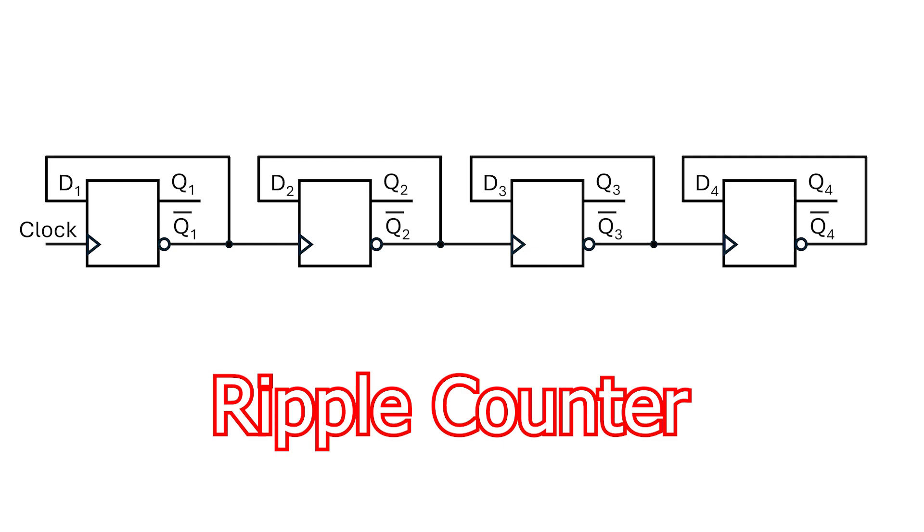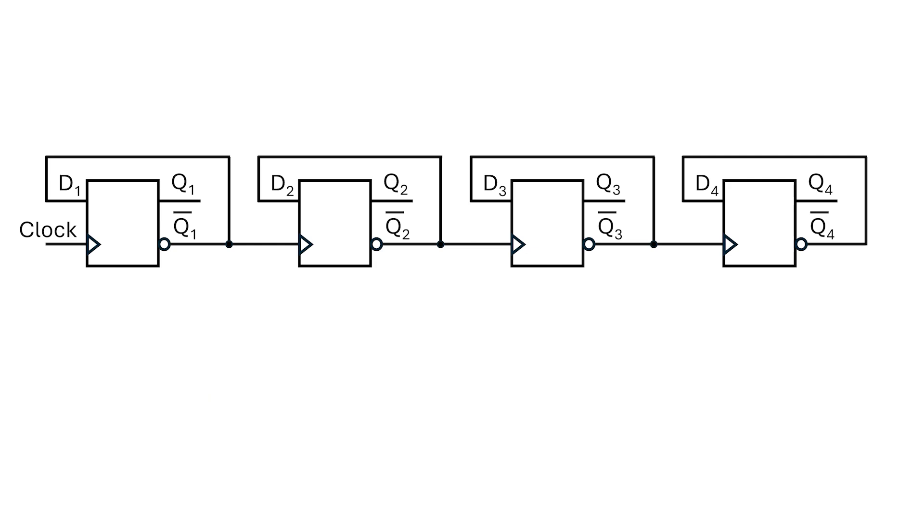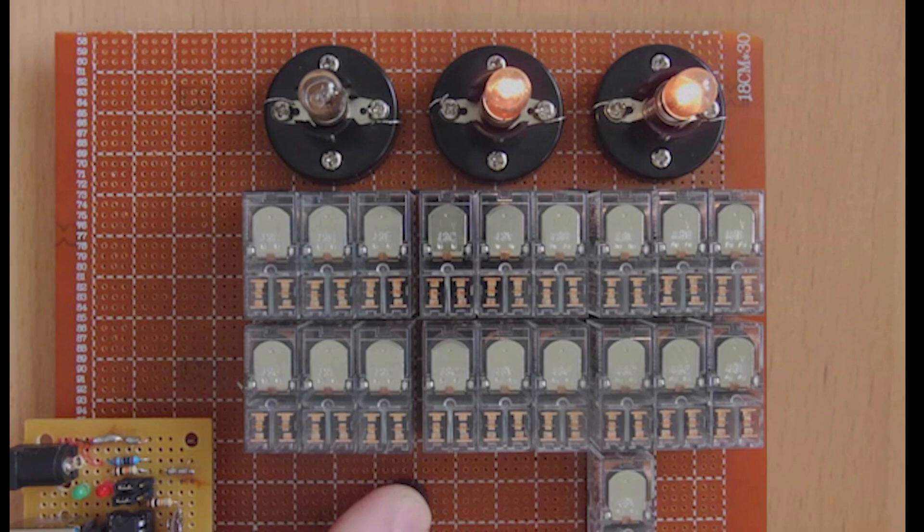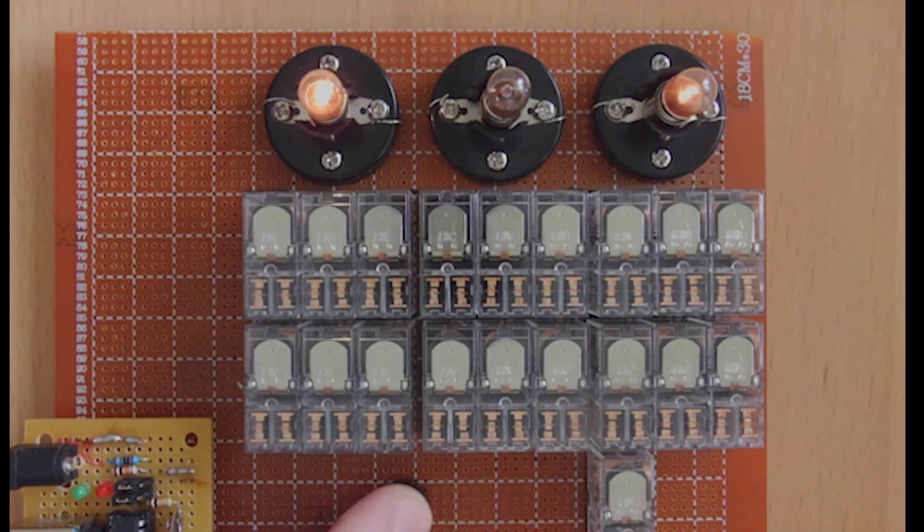Ripple counters are easy to make, but they can be a little bit slow when the ripple chain gets long. But for our digital clock, this should be just fine. I'll stop this video here, and in the next video, I'll look at how we can expand this counter and turn it into a digital clock.